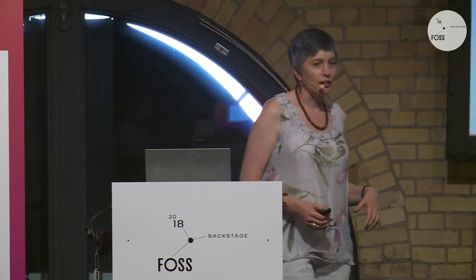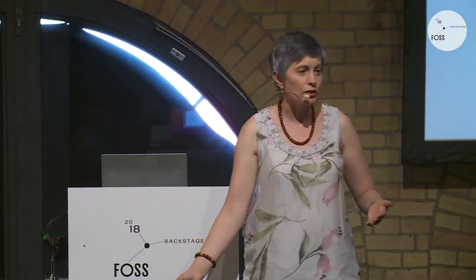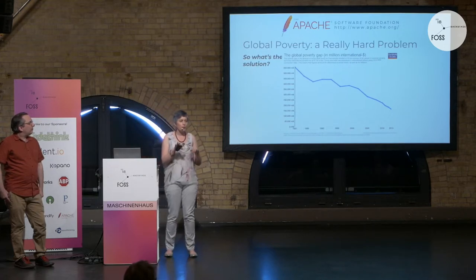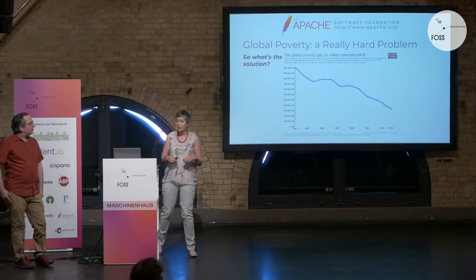If we want to solve the problem, a naive person might say we just give everybody enough money to have more than $2 a day. This is how much money it would cost if we gave everybody in the world making less than $2 a day enough to be over that mark. The amount of money required has gone down — we started in the 1980s at over $500 million, and we're now below $150 million. We are making progress, but what do we need to get those last 10%? We know why we're making progress — it's because of the industrial revolution — so we need something that changes the playing field in the same exponential way, and one possibility is microfinance.